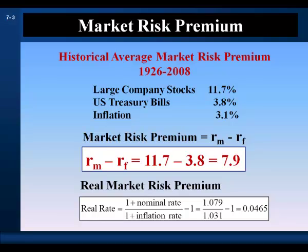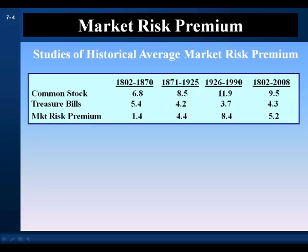These are healthy percentages, but is 7.9% a good estimate for the market risk premium? Economists looking at longer historical periods suggest that the 1926 to 2008 period is unrepresentative and produces an average that is too high given the longer historical experience. The market risk premiums over earlier periods are much lower, and the risk premium estimated over longer periods also gives lower averages.